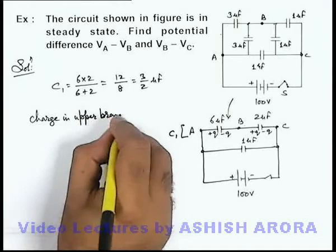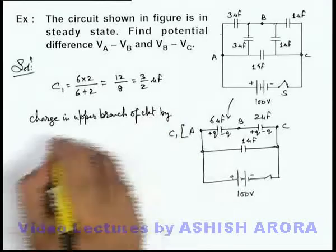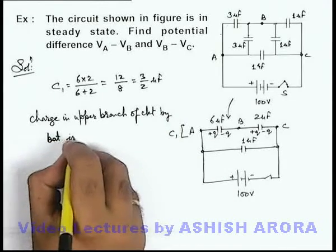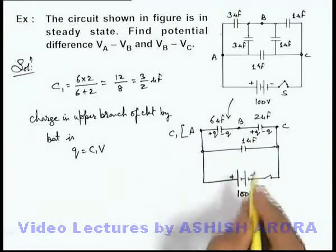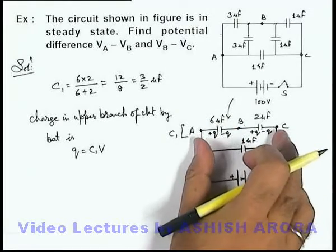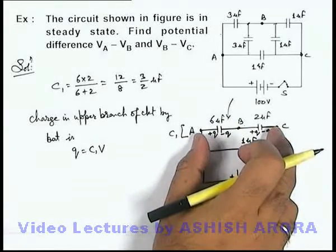upper branch of circuit, and this charge by battery is, this charge can be written as C1 times V. C1 is the capacitance of this branch and V is the potential difference supplied. And we know in a steady state always the final charge on a system is CV.